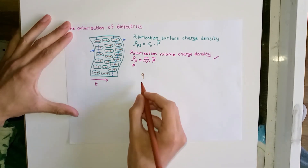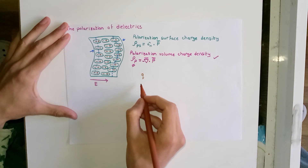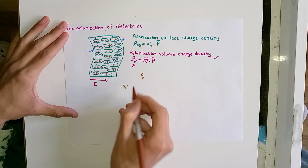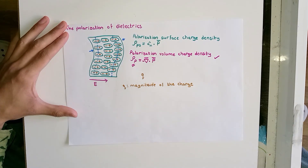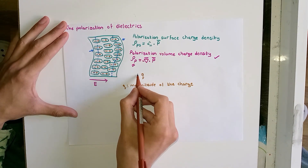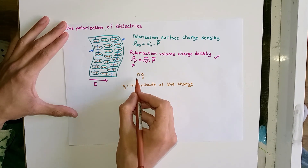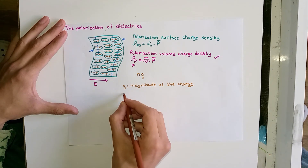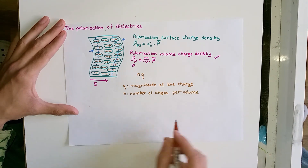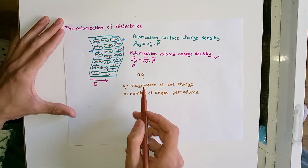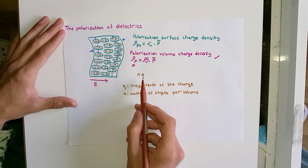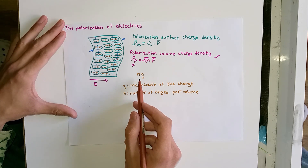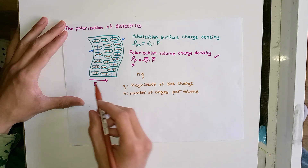First, I will assume the variable q to denote the magnitude of a single charge inside the dielectric, and I am going to multiply q by n, where n is the number of charges per volume. This product between the magnitude of the charge and the number of charges per volume will yield the charge density inside the dielectric.